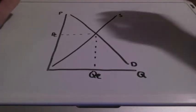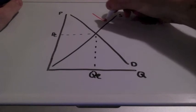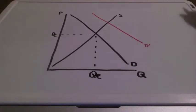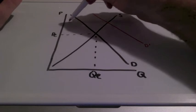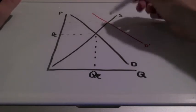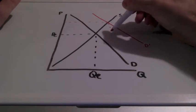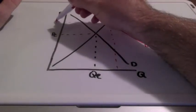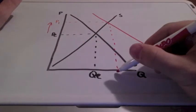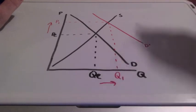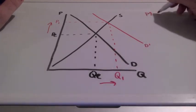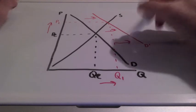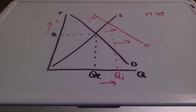In this first example, we have an increase in demand because consumer expectations are high and the size of the market — the number of buyers — has increased. When we have an increase in demand, both price and quantity will increase. I want you to take a look at the relationship of price and quantity supplied.